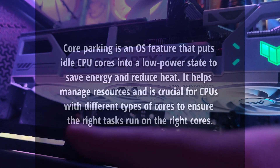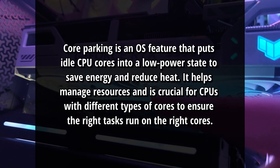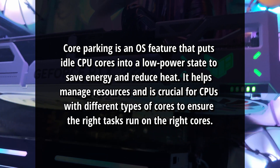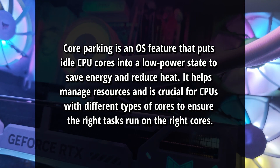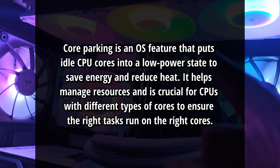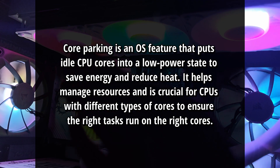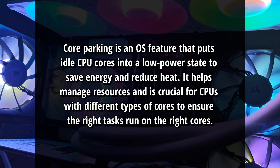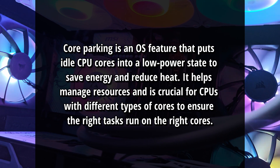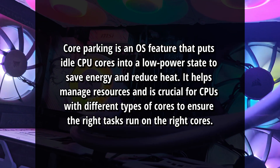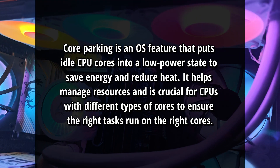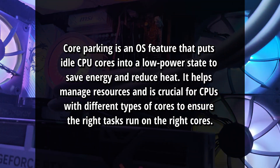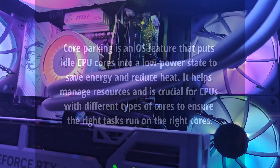The Balanced power plan allows the intelligent scheduling to function as intended. It enables core parking — a feature where the OS can put unused cores into a low power state. This is crucial for this type of CPU, as it helps to efficiently park the non-gaming cores, ensuring that the gaming workload stays on the optimal VCache cores.